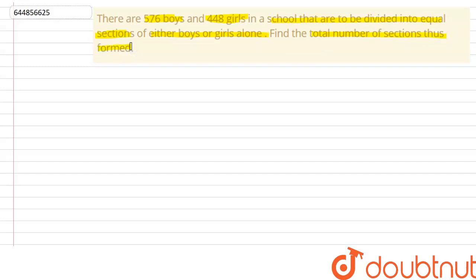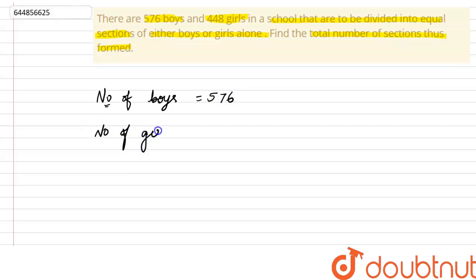We have to find the total number of sections formed by dividing in such a fashion. The number of boys in the school is 576, and the number of girls is 448. These two groups have to be divided into equal sections.